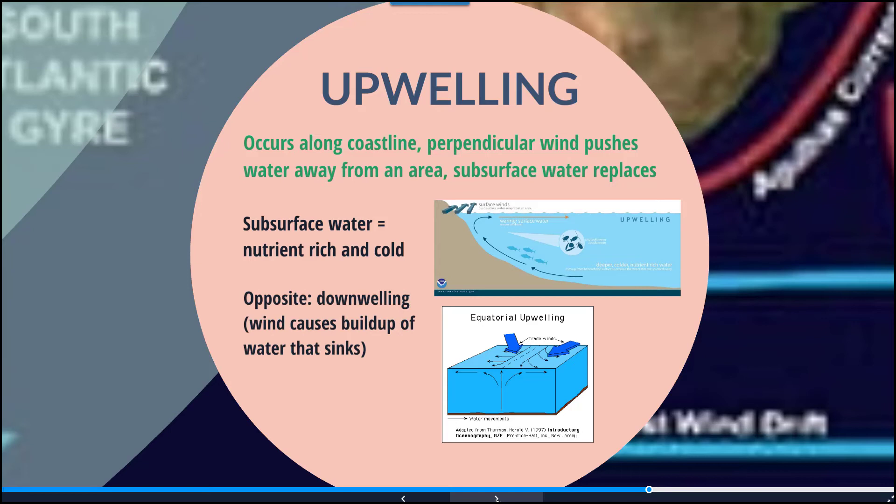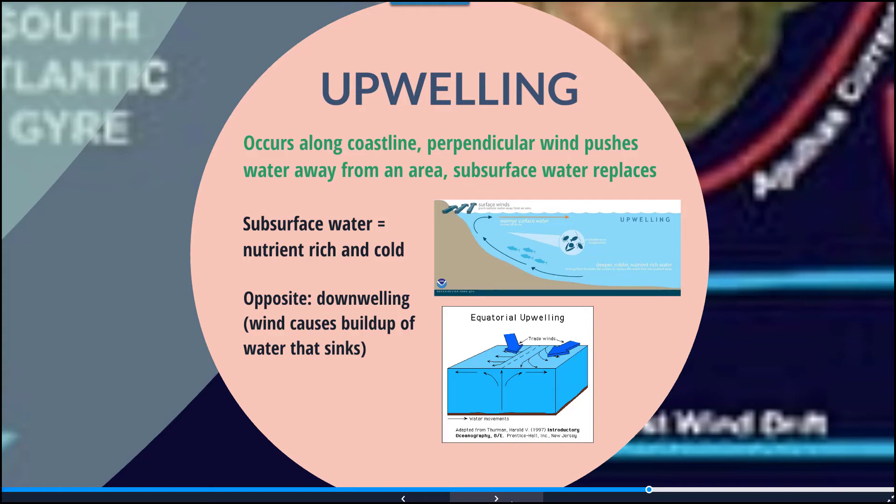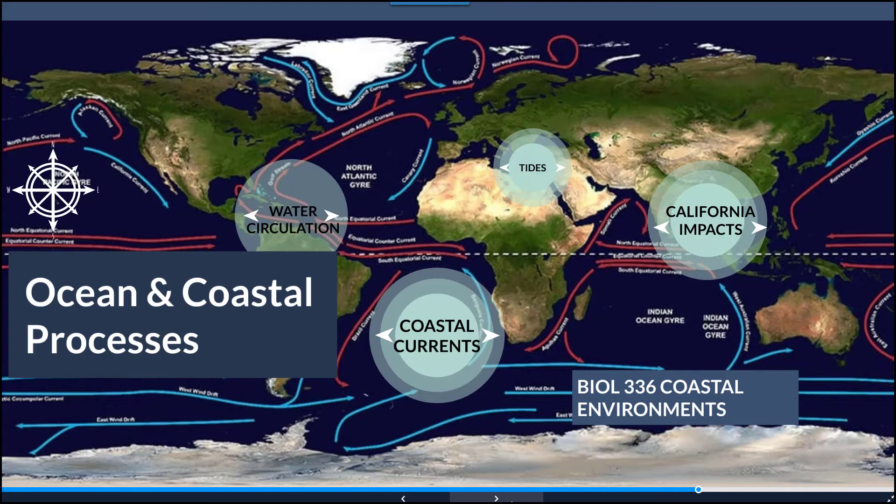The opposite of upwelling is downwelling, where wind causes a buildup of water that sinks. This results in warm water sinking, which is nutrient-poor and not very beneficial for organisms in terms of food.